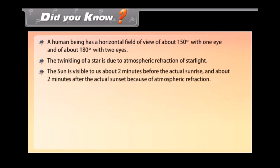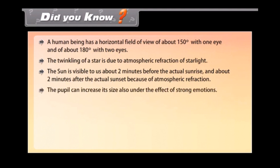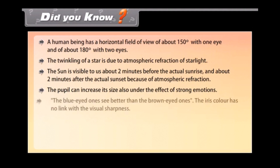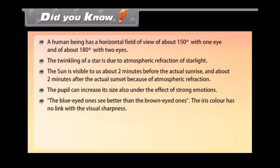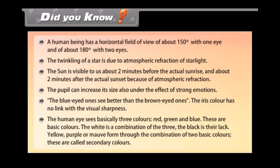The sun is visible about two minutes before the actual sunrise and about two minutes after the actual sunset because of atmospheric refraction. The pupil can also increase in size under the effect of strong emotions. The human eye sees basically three colors — red, green, and blue — which are the primary colors. White is a combination of all three, black is the absence of all three, and yellow, purple, and mauve are secondary colors formed by combinations of two primary colors.